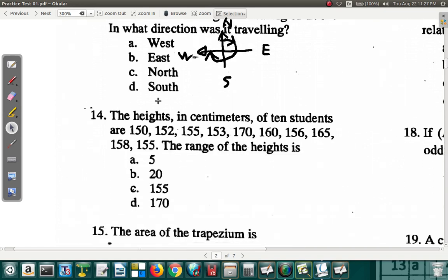Let's look at this other question now. The heights in centimeters of 10 students are 150, and so on. The range of heights is... Since it's asking about range, let's look at the largest, smallest, and subtract them. The largest number here is 170. The smallest is 150. So it's 170 minus 150.